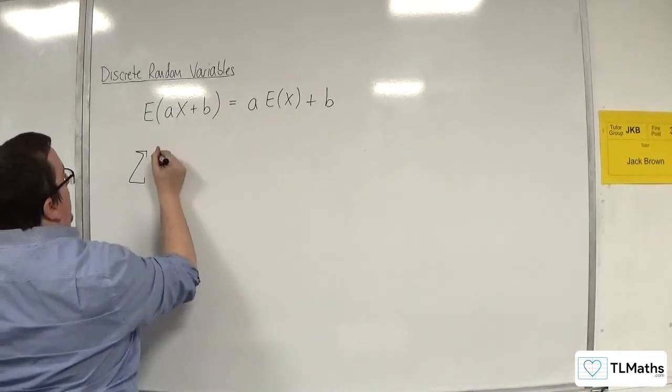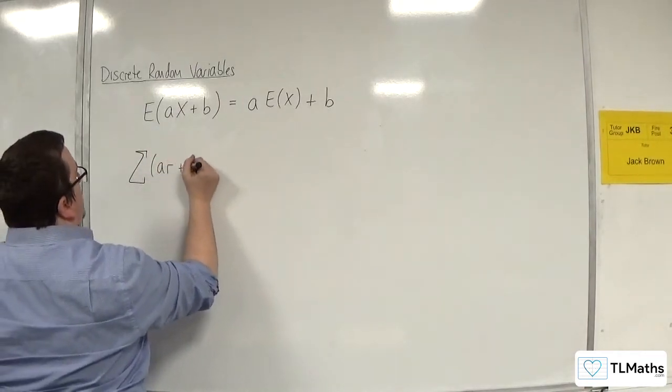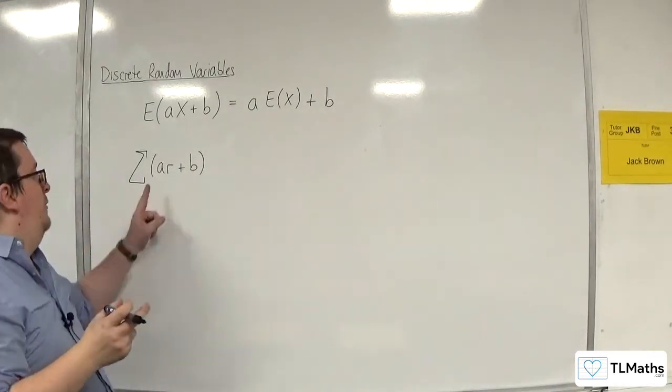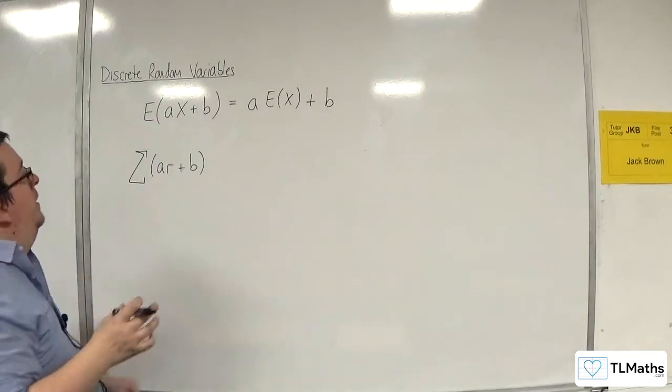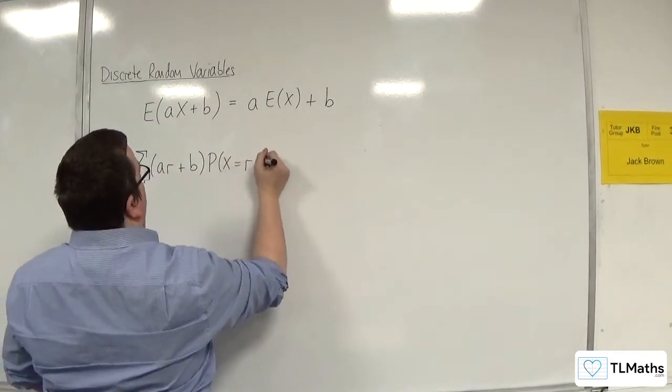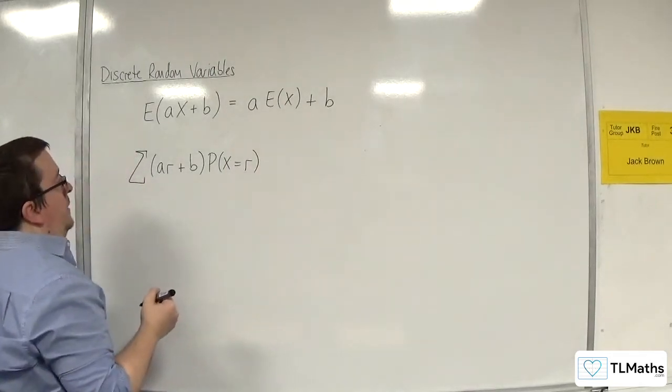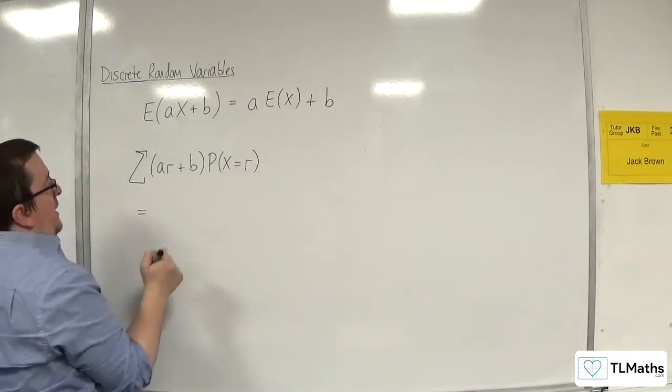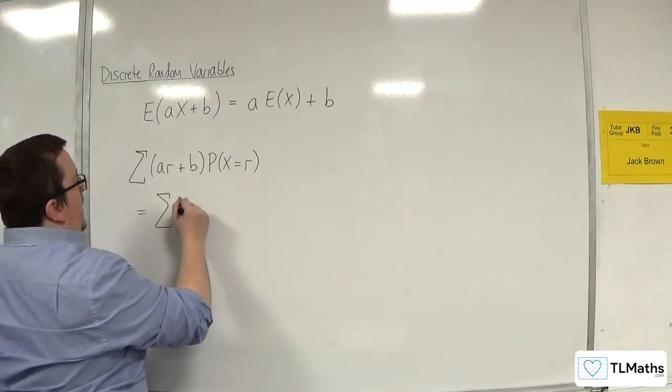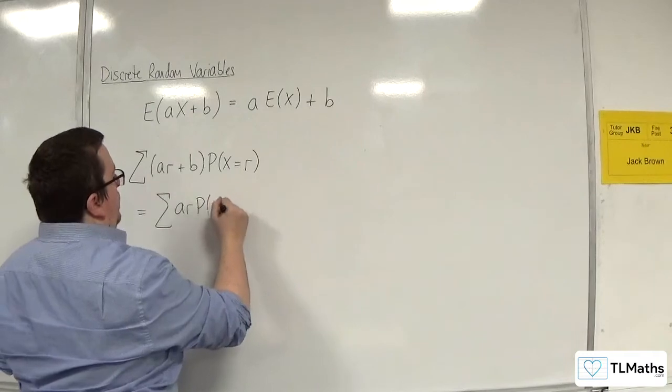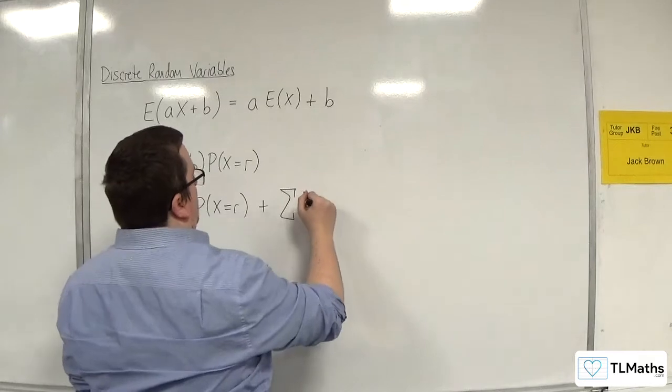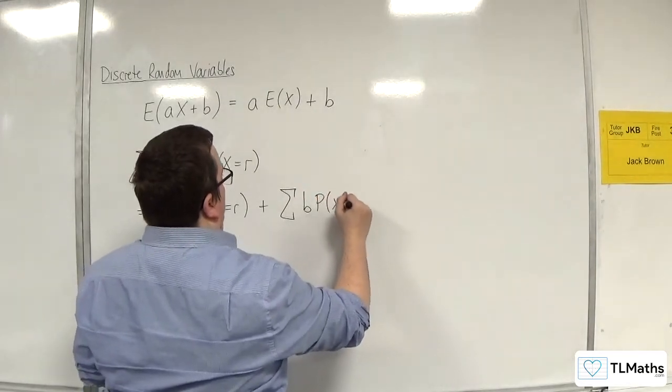So this would be (ar + b), so each of the r values in your table has been coded to that, times by the probabilities that were exactly the same as before. And then what you can do is you can break that summation apart. And so you've got ar times the probability of x being equal to r, plus the sum of b times the probability of x being equal to r.